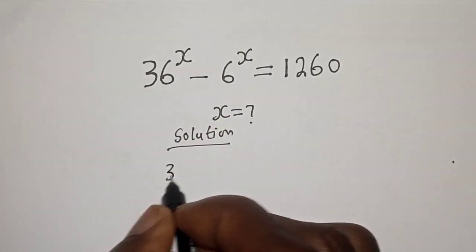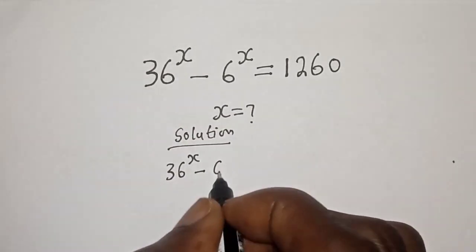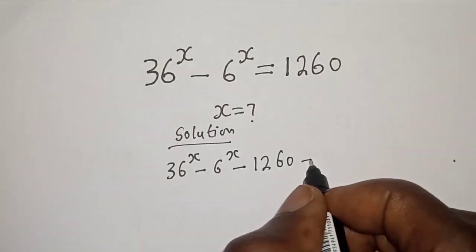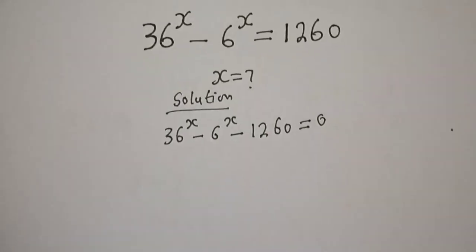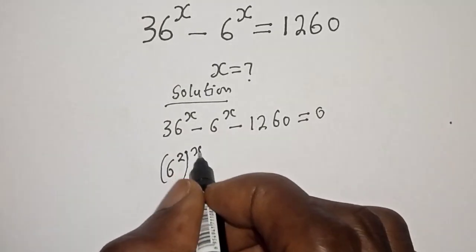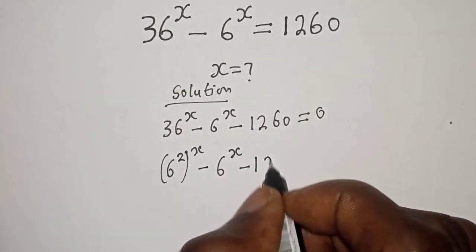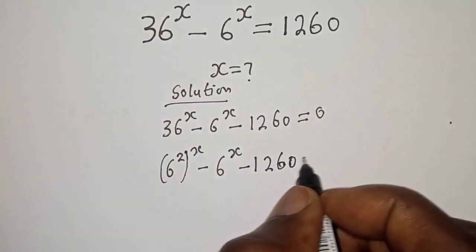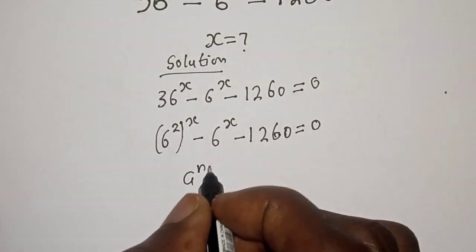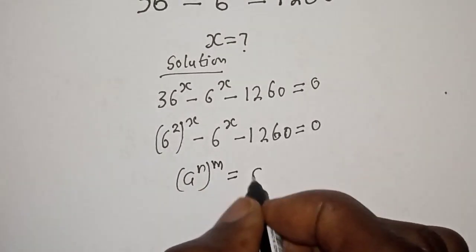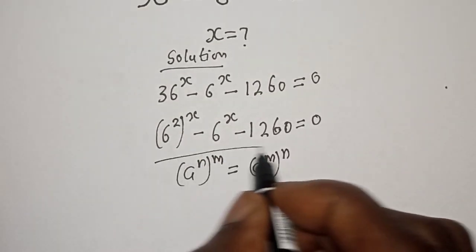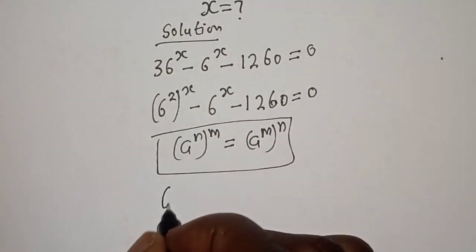We have 36 raised to power s minus 6 raised to power s minus 1260 is equal to zero. Then 36 can be written as 6 squared, raised to power s, minus 6 raised to power s minus 1260 is equal to zero. Here we have a raised to power n raised to power m is equal to a raised to power m times n.